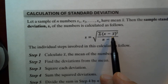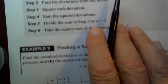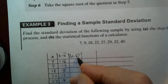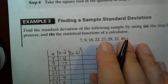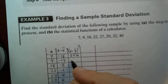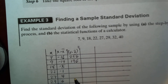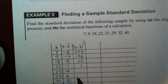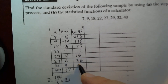The next column is x minus x-bar squared — we square each deviation. Squaring −16 gives 256; squaring −14 gives 196; squaring −5 gives 25; squaring −1 gives 1; squaring 4 gives 16; squaring 6 gives 36; squaring 9 gives 81; and squaring 17 gives 289.